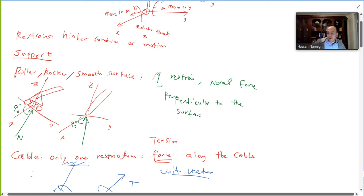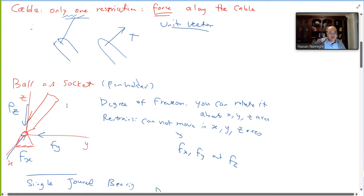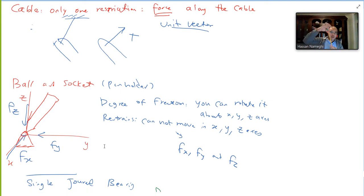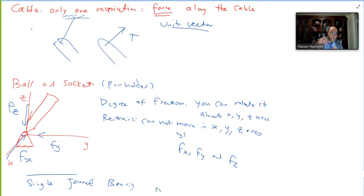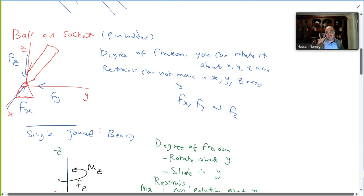Next is the ball and socket joint. Think of it like a pin holder — you can rotate it about the x, y, and z axes freely. However, the pin holder keeps the object fixed in place, so it cannot translate in x, y, or z. The restriction is on translation, not rotation.